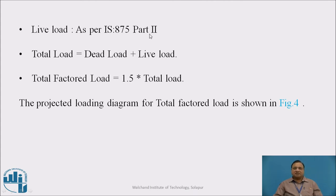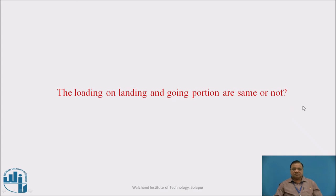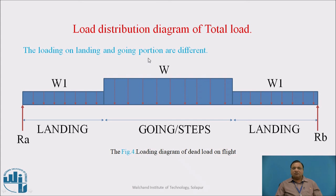The live load is to be taken as per IS-875 Part 2. The total load is dead load plus live load. Total factored load is 1.5 times the total load. The projected loading diagram for total factored load is shown in figure 4. The loading on the landing and going portion are different. On the landing portion we have only dead weight of the waist slab and live load, whereas on the going portion we have dead weight of the waist slab, dead weight of steps, and live load. That is why there is a difference between loading on the landing and the going portion.